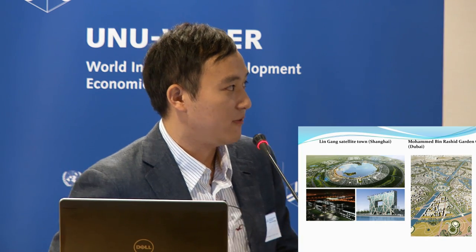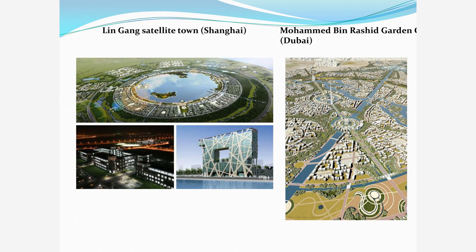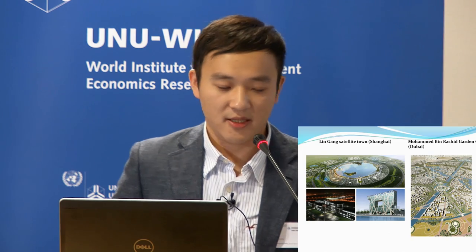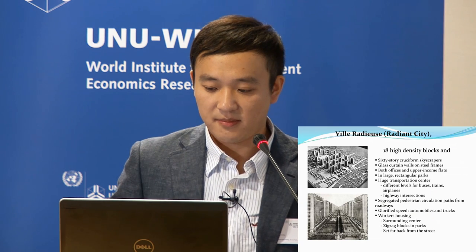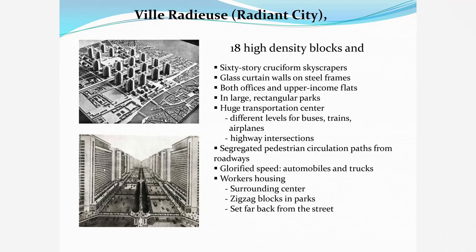We still learn a lot from this model today. When we build satellite cities such as Lingang around Shanghai or satellite cities around Dubai, we usually use this model. Another model is the Radiant City, which builds high-density blocks to solve environmental quality problems and allows more green parks and plants to be built in the city while saving land area.